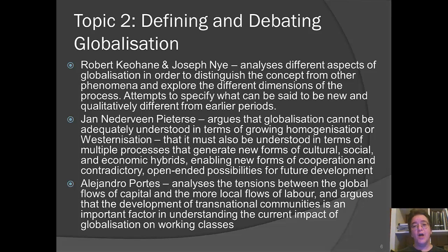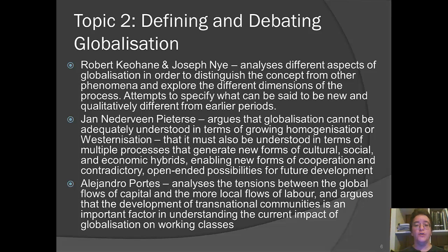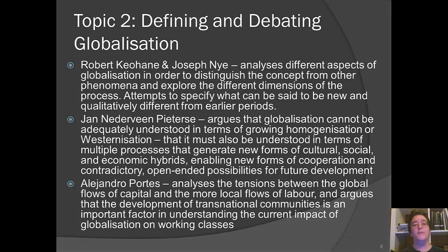Jan Nederveen Pieterse argues that globalization is often understood in terms of homogenization or westernization, but these are not adequate ways to understand it. It also needs to be understood in terms of multiple processes that generate new forms of cultural, social, and economic hybrids — new forms of cooperation with contradictory and much more open-ended possibilities for future development. This piece opposes the idea that globalization is solely homogenizing; it is a creative force that creates new combinations with open-ended possibilities.